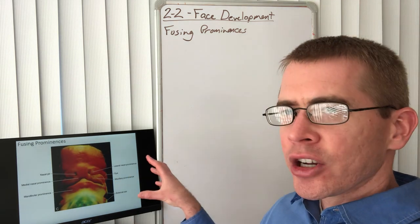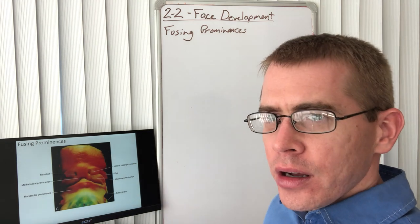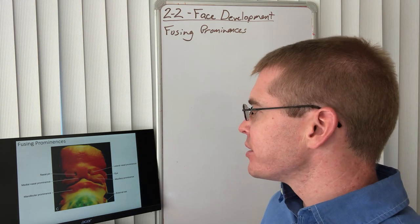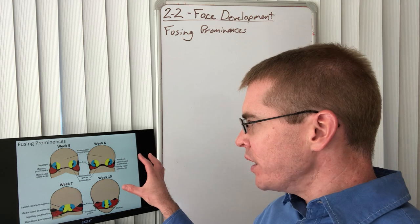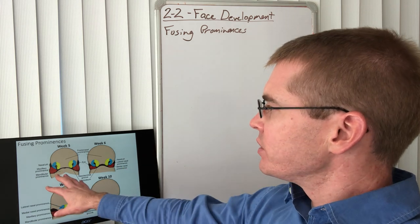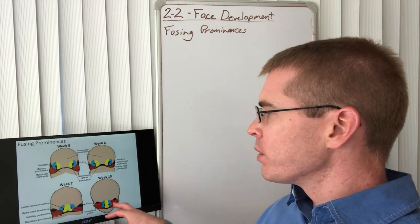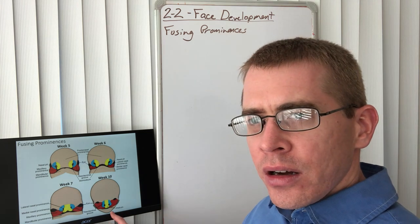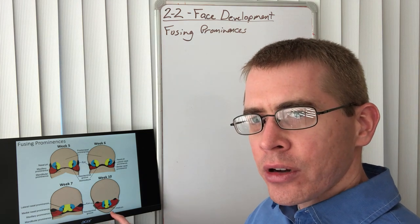You can see here an actual photograph of these prominences as they're developing. In week five, you can see these prominences have begun to form. By week 10, the adult appearance is really quite prominent.